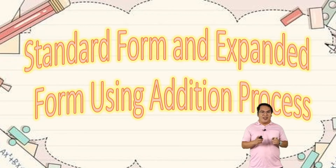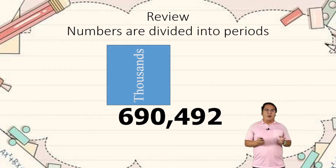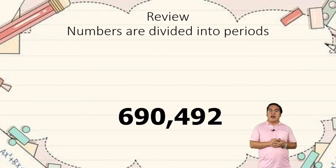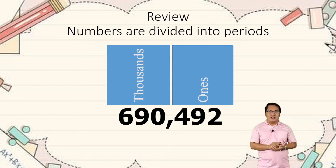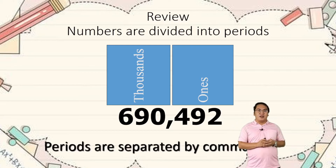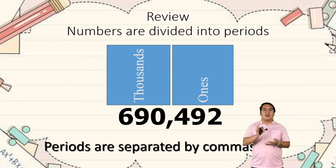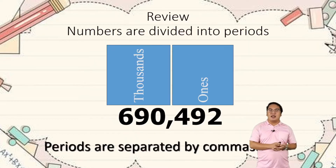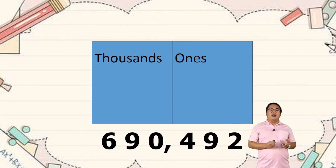Before that, let's have a review or a short recap. Numbers are divided into two periods: the thousands and ones place, so they are called place value. Periods are separated by a comma. If you're going to look at a six-digit number, there is a comma within it. The first three digits are what you call the thousands, and the second one is the ones place.